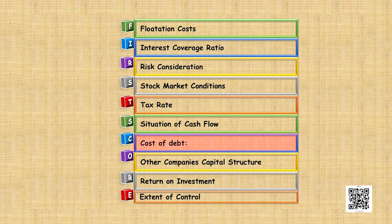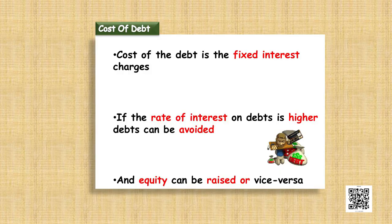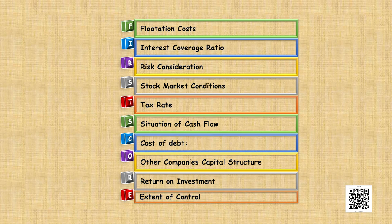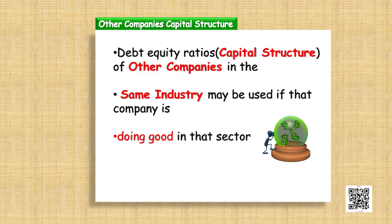If the cash flow position is not good the company should be cautious. The cost of debt refers to fixed interest charges to be paid at recurring intervals. If the rate of interest on debt is higher, debt can be avoided because it increases the company's expenses and reduces profits, and the company can issue equity instead. The next factor is the capital structure of other companies — the debt equity ratio of peer companies in the same industry can be used as a benchmark to help the company remain at par with competitors.